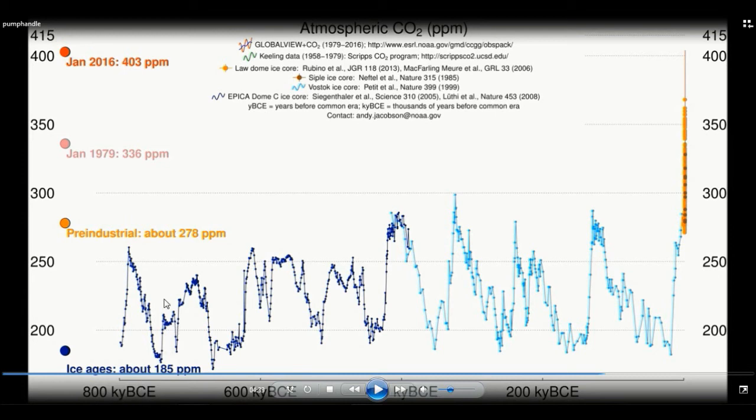You can see that going back 800,000 years into earth's past, carbon dioxide concentrations varied between 100 parts per million and 300 parts per million. This is the natural variation in carbon dioxide concentrations.